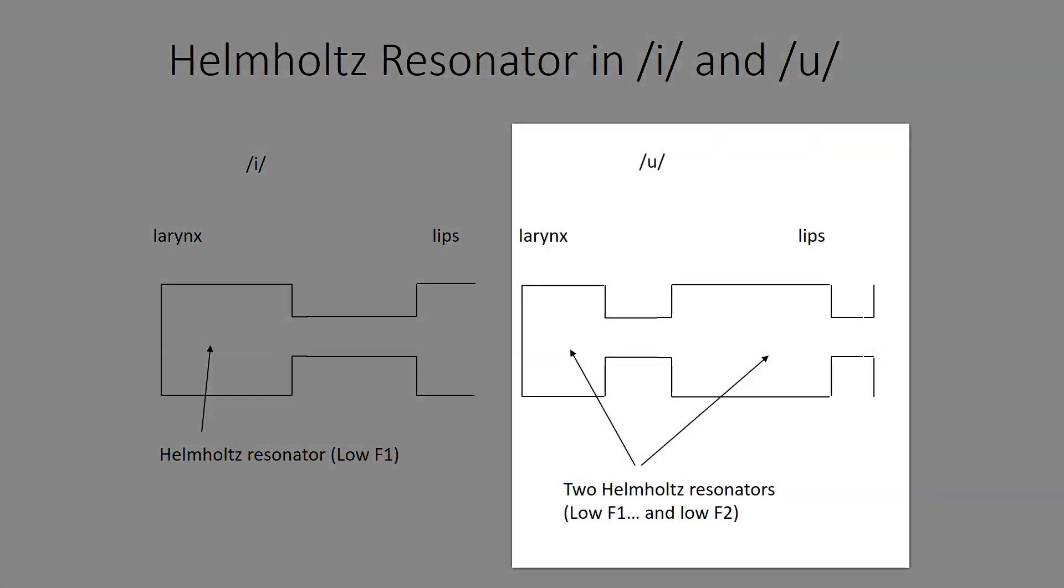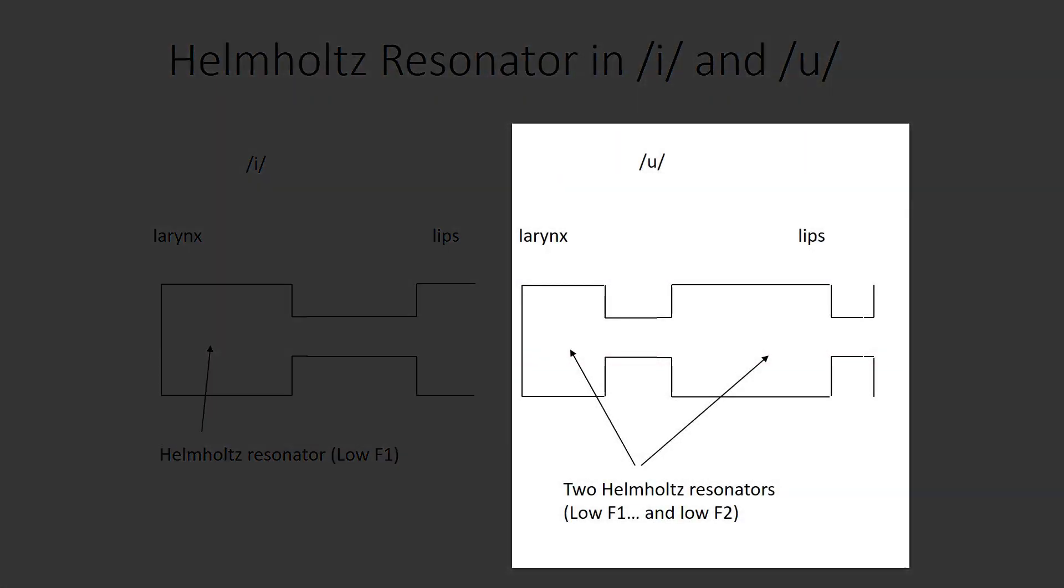In the case of an /u/, the tongue body is raised and retracted, so that will make a constriction in the rear part of the vocal tract. And that constriction then creates a resonator in the pharynx region for that vowel as well. /u/ also has lip rounding, and that constriction at the lips will create another bottle shape in the front part of the vocal cavity, which will give /u/ a low second formant as well.